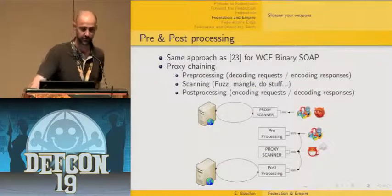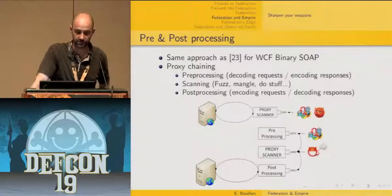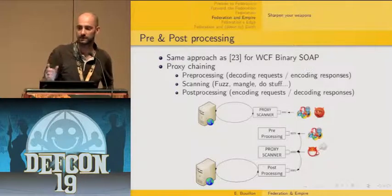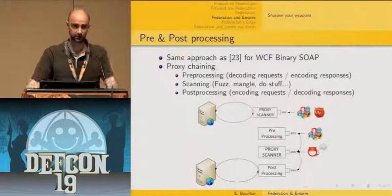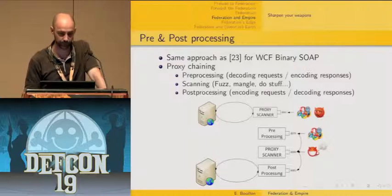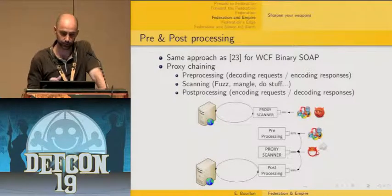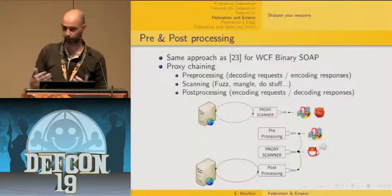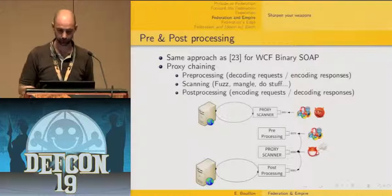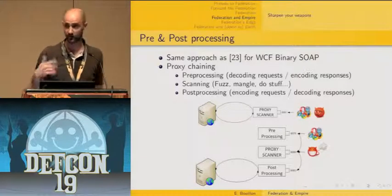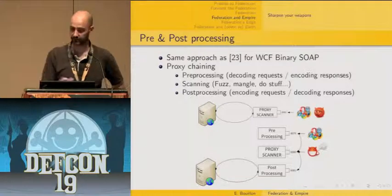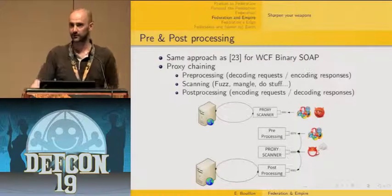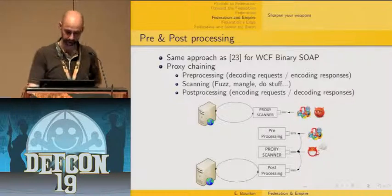The approach I've been using is not new — it was previously used by people from iSEC security when assessing Microsoft's proprietary binary encoding of SOAP requests for WCF. The idea is to chain proxies. First, a preprocessing proxy decodes requests and encodes responses. The middle proxy is your real scanner where your pen-tester intelligence takes place. Then the post-processing proxy encodes requests back and decodes responses. This way the application still receives requests in the proper expected format and can work correctly.